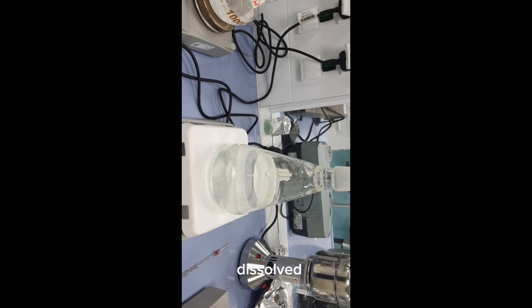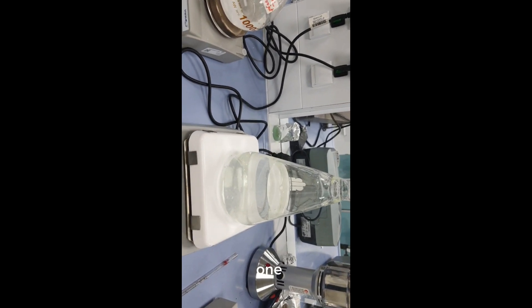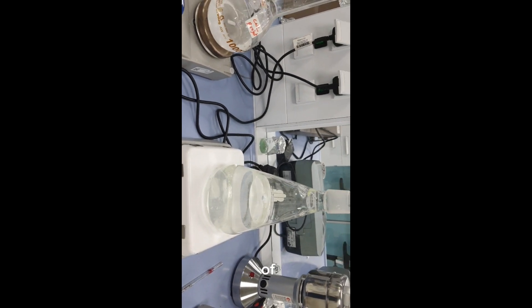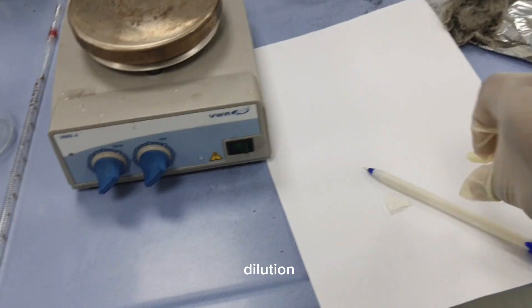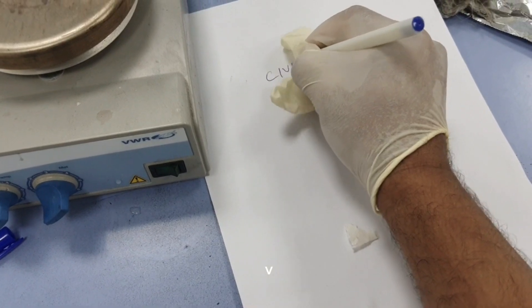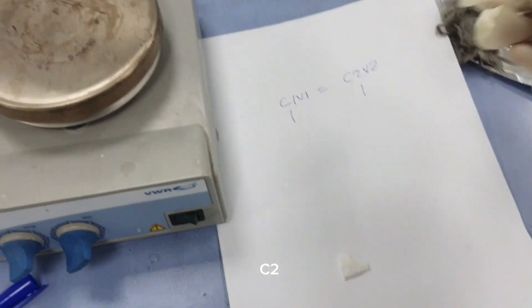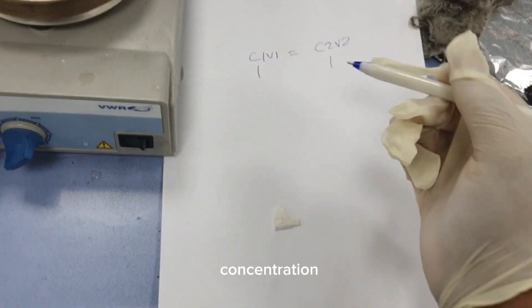This has almost dissolved. This is one normal or one molar. Now we will do serial dilution using the concept of dilution. We know that C1V1 equals C2V2, where C1 and C2 are concentrations in molarity, normality, percentage, or mole fraction.